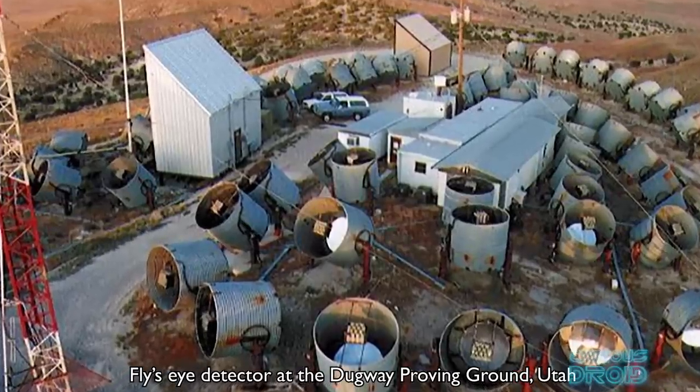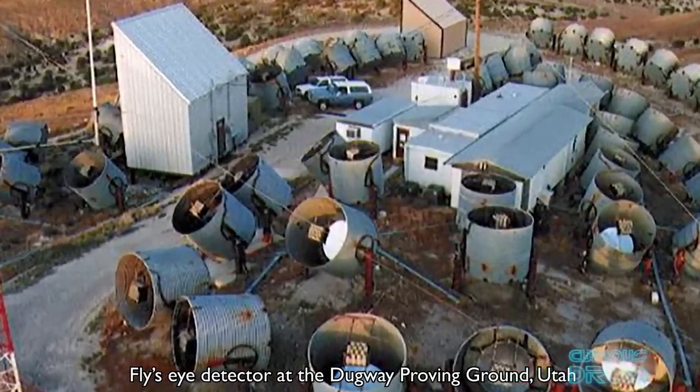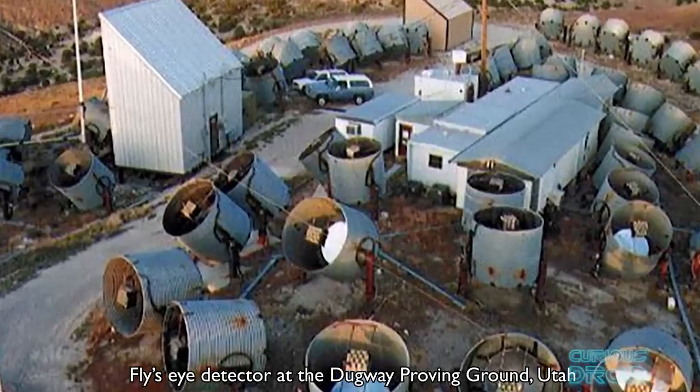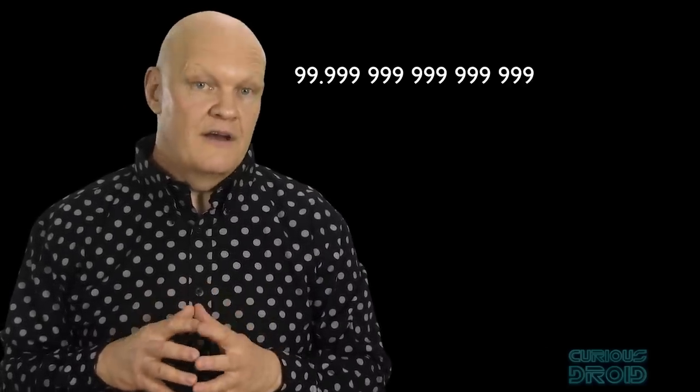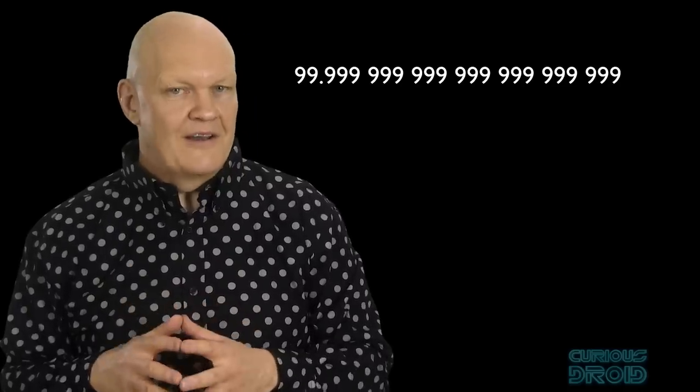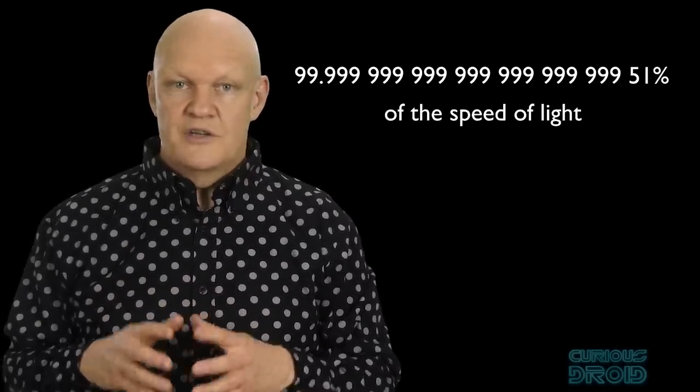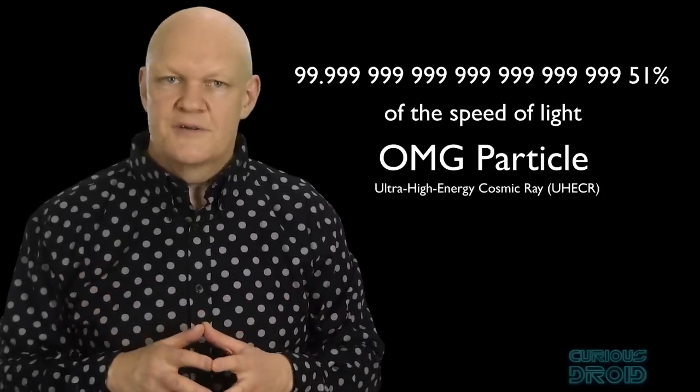When the first one was detected in 1991 by the Fly's Eye detector in the Dugway Proving Ground, Utah, it was travelling at 99.999999999999999951% of the speed of light, which is why it got the nickname of the Oh My God particle.